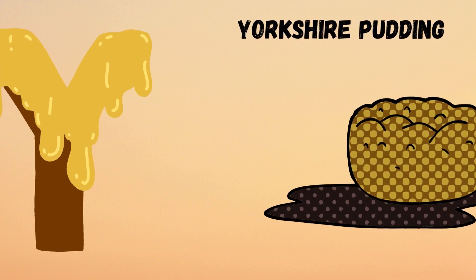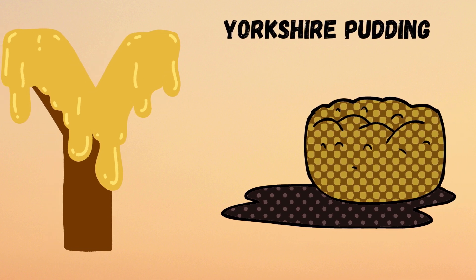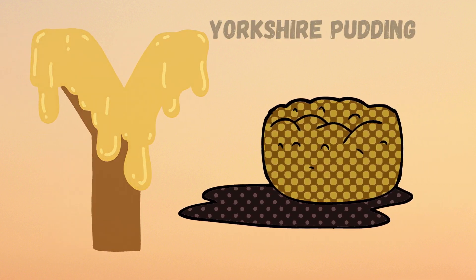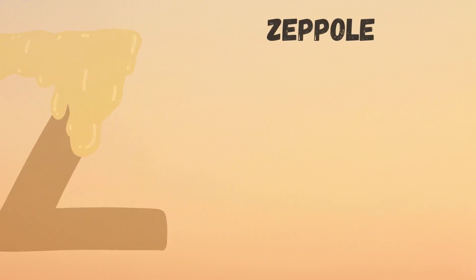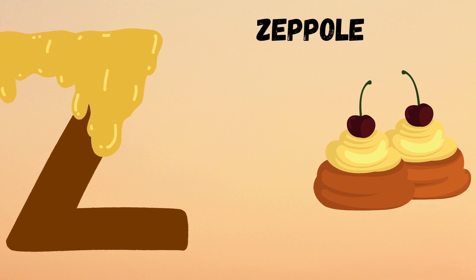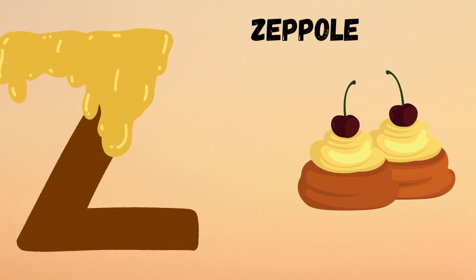Y is for Yorkshire Pudding. Y, Y. Yorkshire Pudding. Z is for Zeppole. Z, Z. Zeppole.